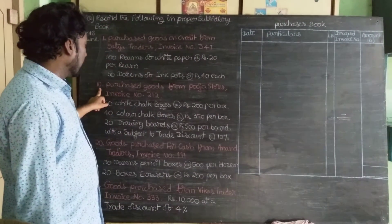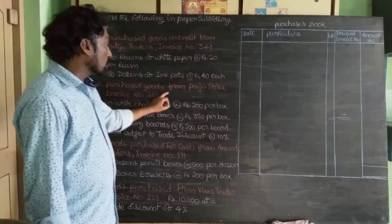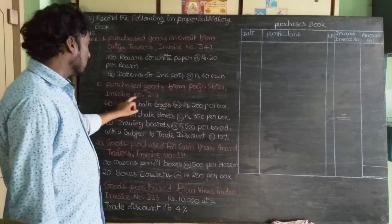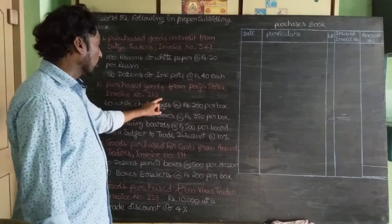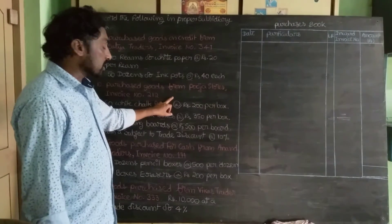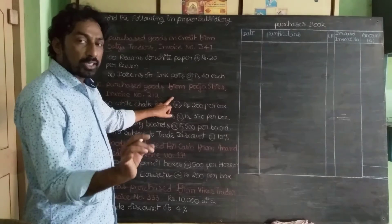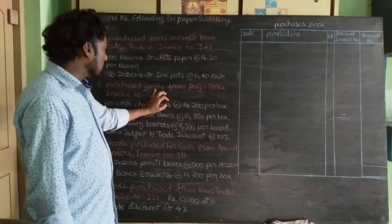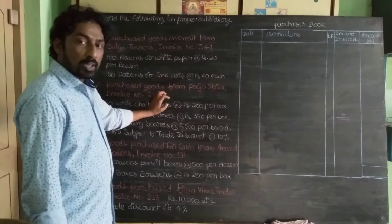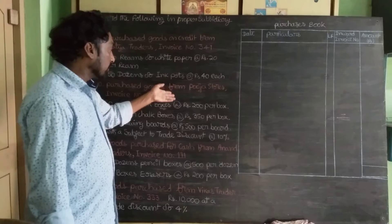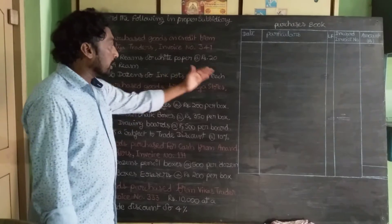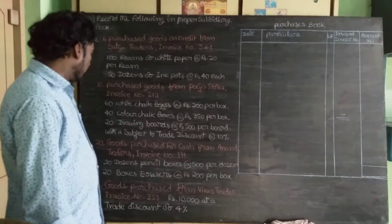On the 10th day, June 10th: purchase goods from Pooja Stores, invoice number 221. Cash and cheque are not mentioned in this transaction, so it is goods purchased on credit. This is also to be recorded in the purchase book.